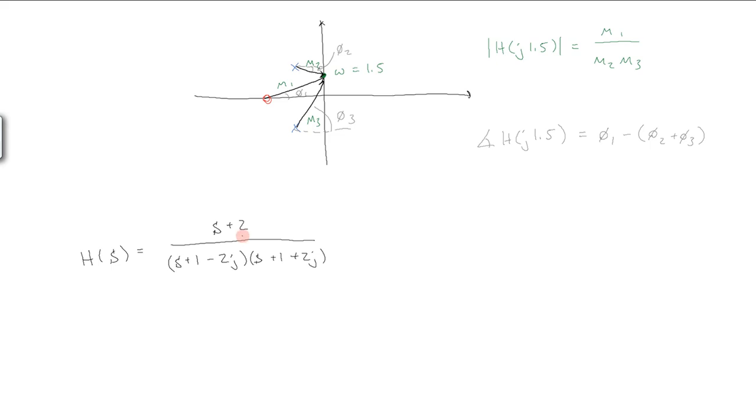times s plus 1 plus 2j, so this has one zero at negative 2, and two poles, one at negative 1 plus 2j, and one at negative 1 minus 2j.